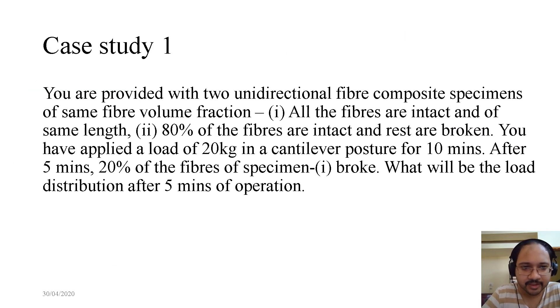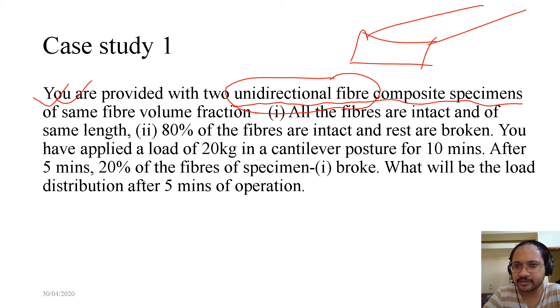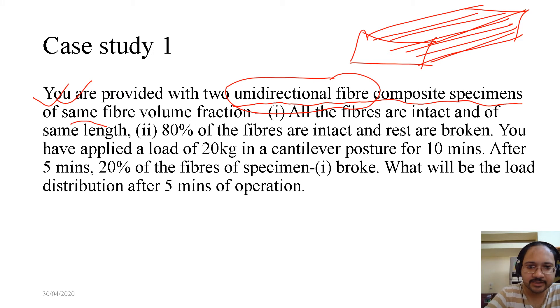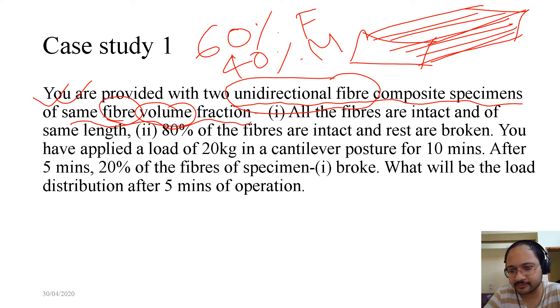Now, let us look into a case study. You are provided with two unidirectional fiber composite specimens. Now, we have not done much detail of unidirectional fiber composites, but we know what unidirectional fiber means. In simple terms, if this is a specimen, then these are all the unidirectional fibers. And these two specimens, they have the same fiber volume fraction. Also, we have not discussed much about fiber volume fraction, but from the term, we can say, it is a fraction which is expressed in terms of volume, and the content of fiber in that volume is same. That means, if I am talking about this composite as a 60% fiber and 40% matrix, it is the same for both the specimens.